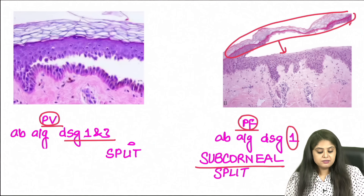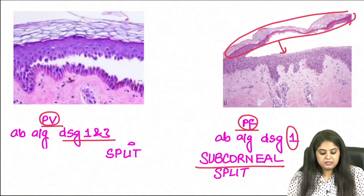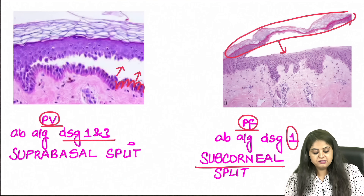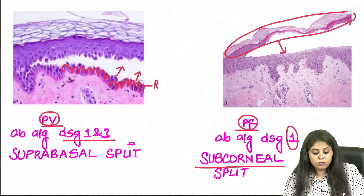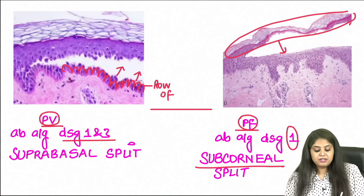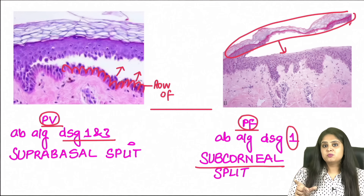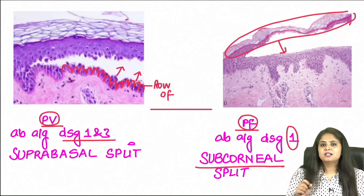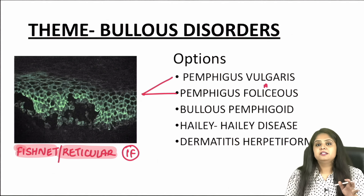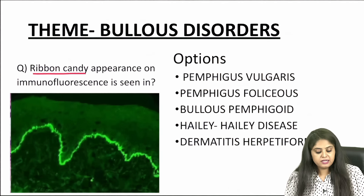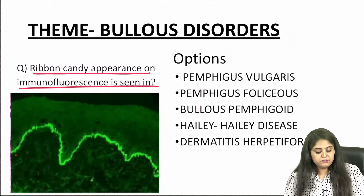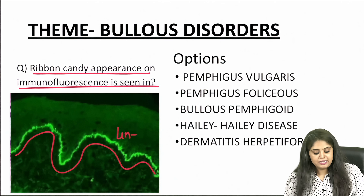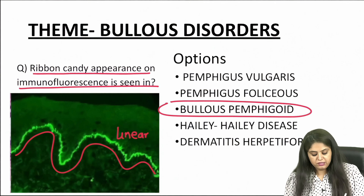Homework: pemphigus vulgaris shows a particular appearance in those basal cells whose name needs to be mentioned — and similar cells are also seen in a type of necrosis in general pathology. For the next image, ribbon candy appearance (linear pattern) on immunofluorescence is seen with bullous pemphigoid, among the given options.